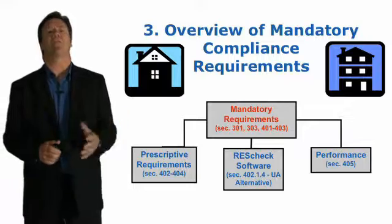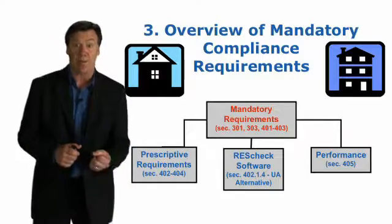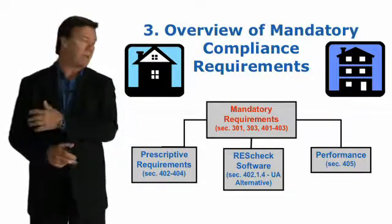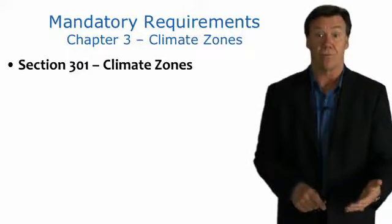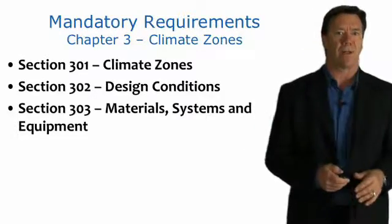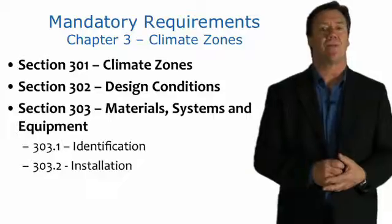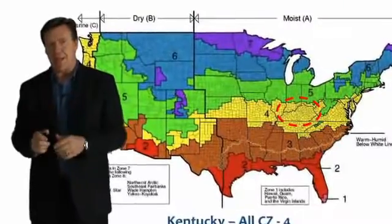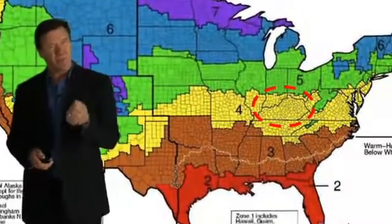Let's have an overview of the mandatory compliance requirements. When we look at how the code is set up, we have some prescriptive requirements and some that are mandatory. These mandatory requirements are really important — we have to follow these no matter what. The three basic areas are: climate zones and design conditions, materials and systems, and equipment. Within the IECC, there are roughly eight climate zones, and all of Kentucky falls into climate zone four. So when we look at our chart, all we're looking for is climate zone four — that yellow band that runs through the map of the United States.